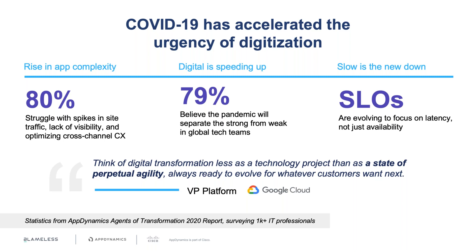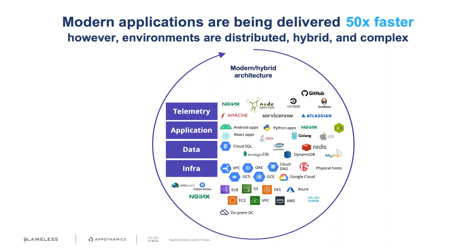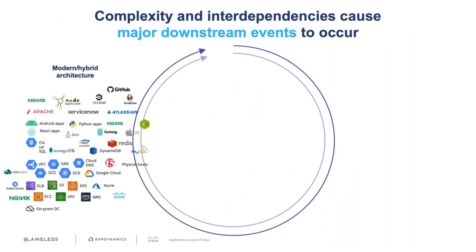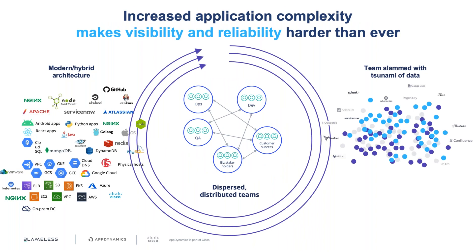That's why SLOs are focusing on latency as well as availability. Today's environments are no longer simple monolithic architectures — we must support hybrid architectures spanning multiple operating models, leading to an explosion of complexity and interdependencies. All pieces of the puzzle are producing data about themselves, putting us at risk of having isolated islands of disassociated data.